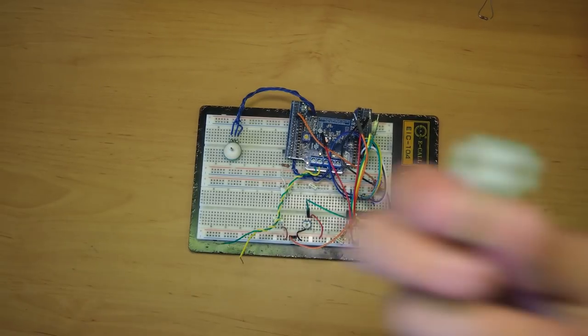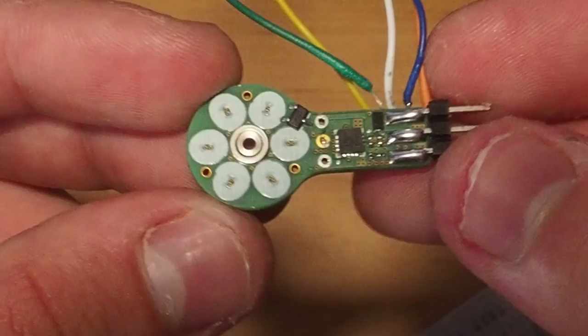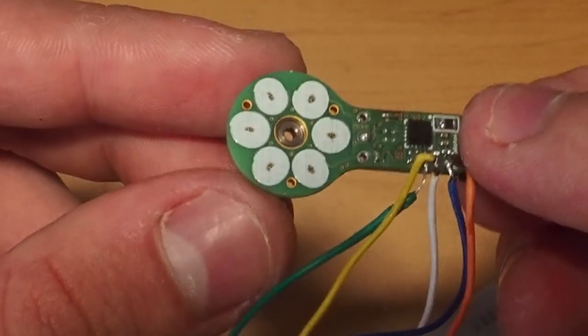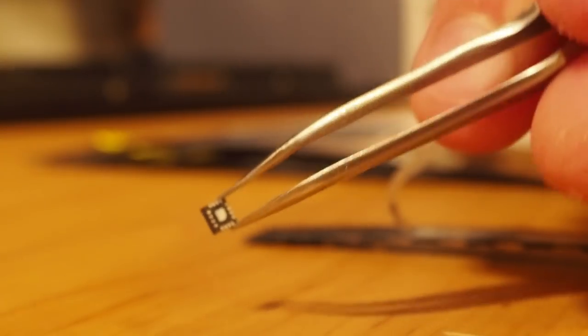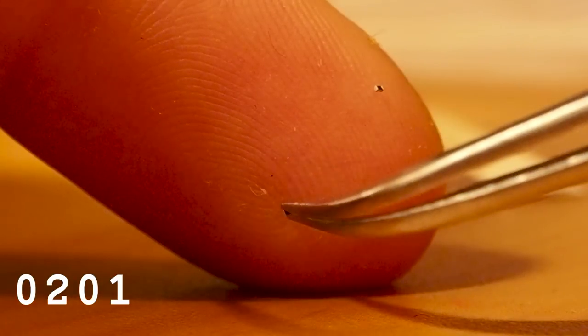I managed to fit all the electronics in an area of 8mm x 14mm by soldering the parts on both sides of the PCB. Both the motor driver and my controller have a 3mm x 3mm QFN package, and most of the other passive components are all 0201s. So yeah, it was quite challenging to hand solder.